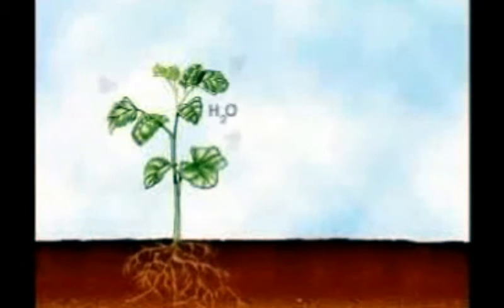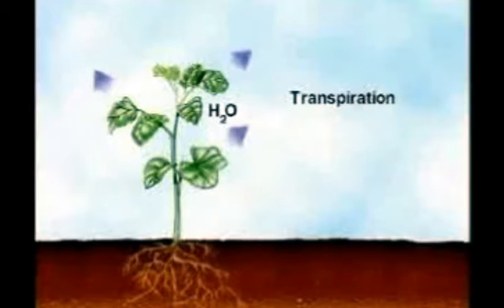The evaporation of water from plant parts that are exposed to the air is called transpiration. Plants lose about 90% of their water through their leaves.